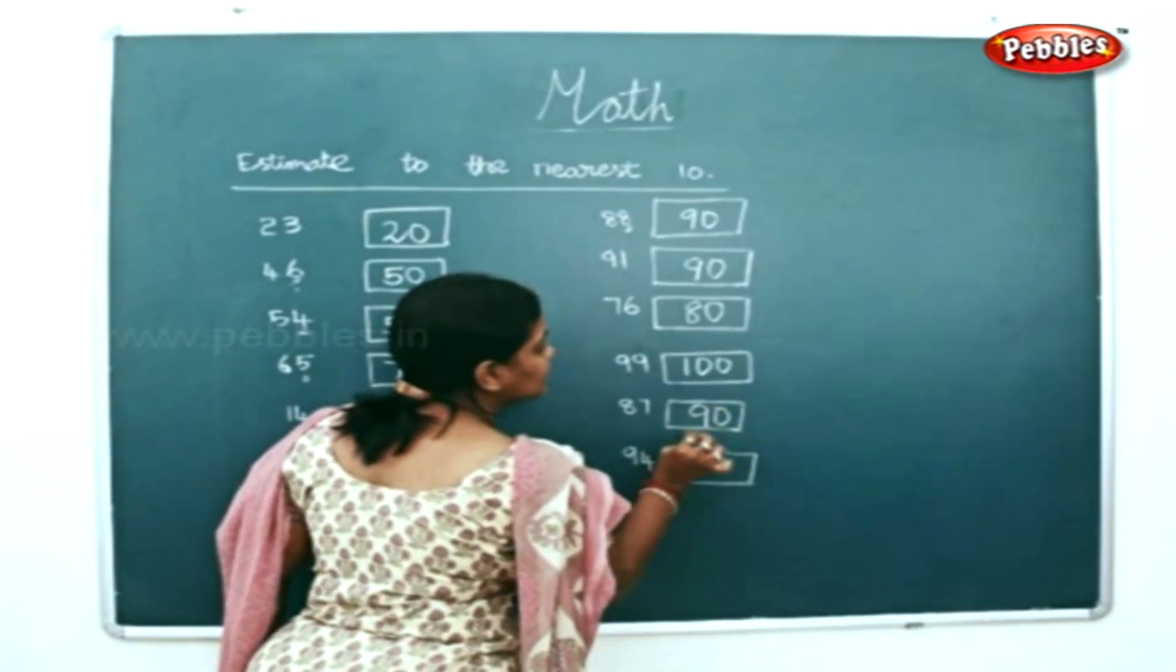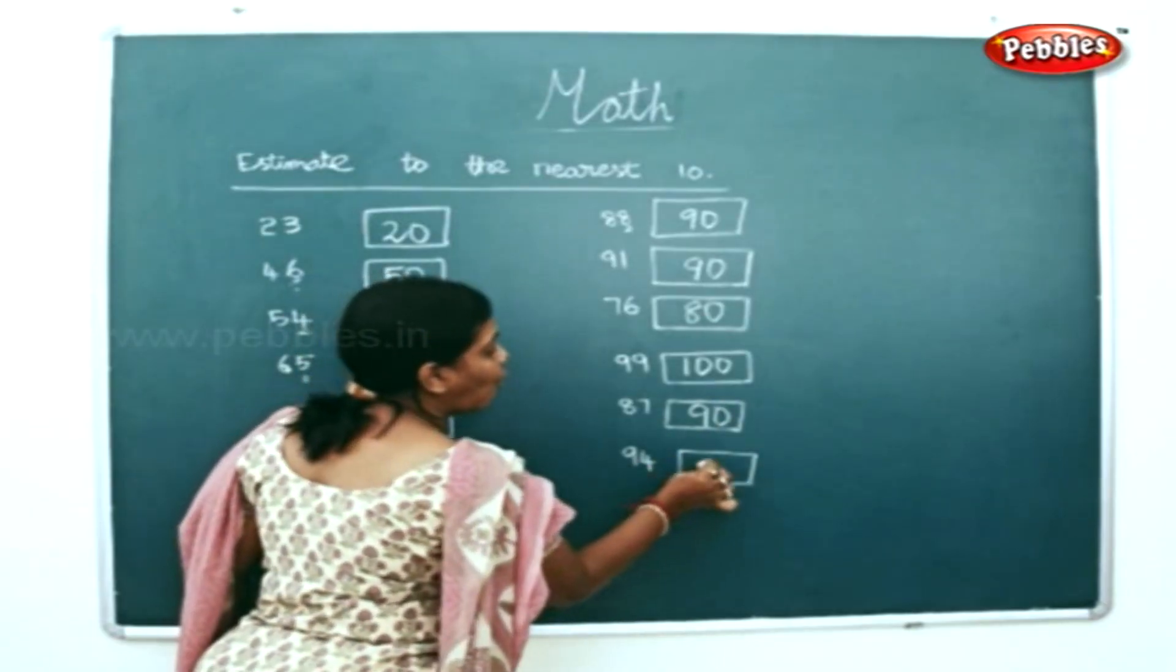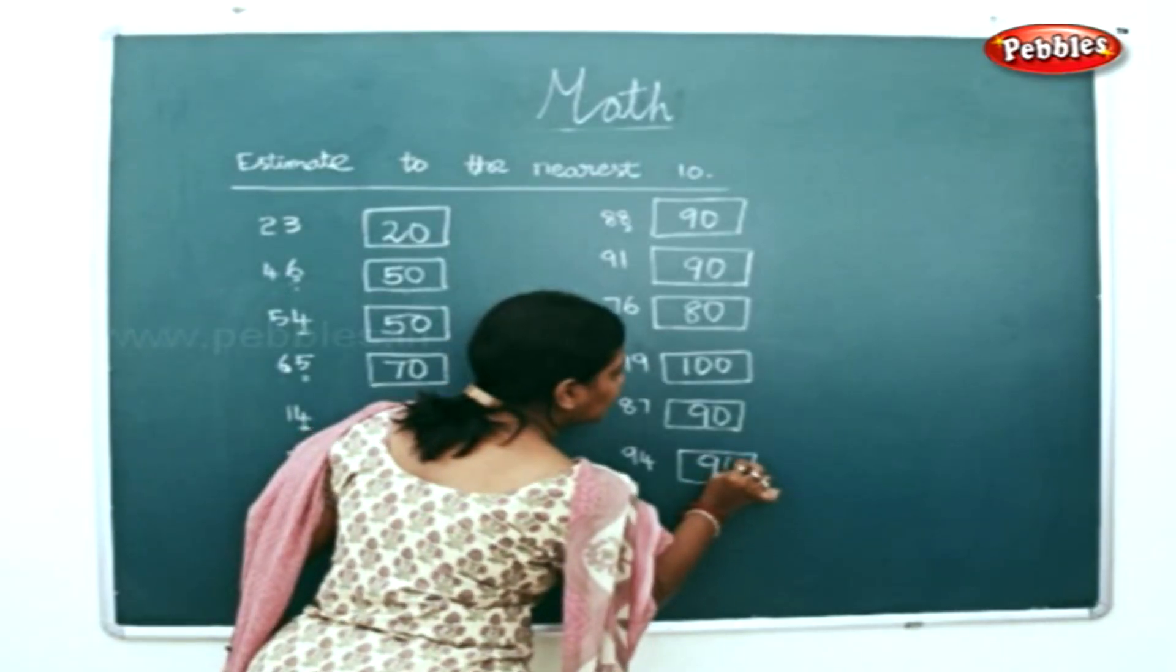90 will be the closest 10 here. 94 - 90 will be the closest 10.